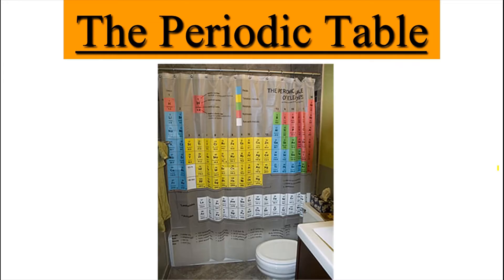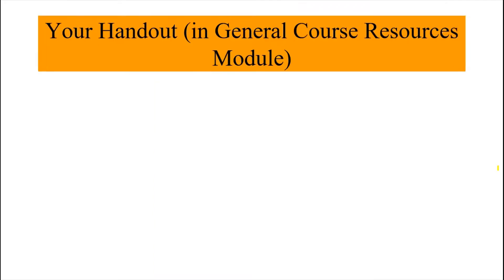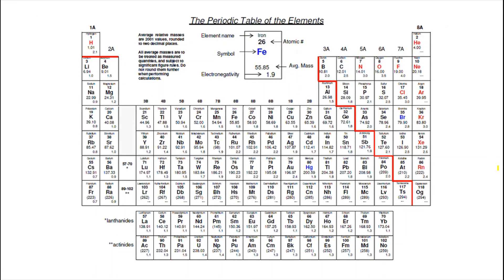Welcome back students. Our topic for the next section is the periodic table. You can probably get this shower curtain at Amazon.com. Now in your general course resources module of our Canvas page, you should be able to download this periodic table that is the one we're going to be using.